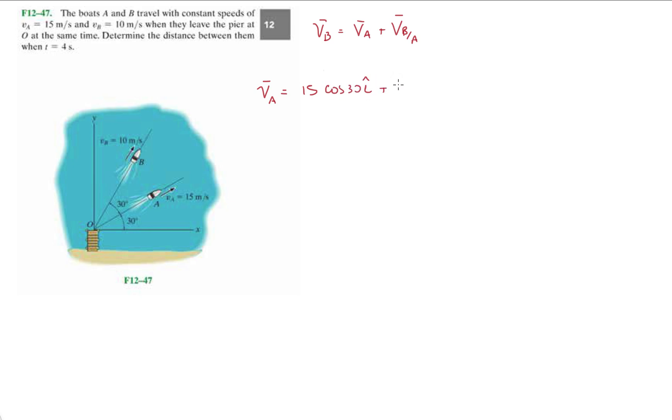v_A is going to be 15 cosine 30 in the i direction and then 15 sine 30 in the j direction. v_B is going to be 10 cosine 60 in the i direction plus 10 sine 60 in the j direction. They're both going to the right which is positive x and they're going up which is positive y, so all these components should be positive.